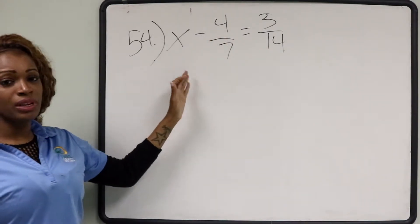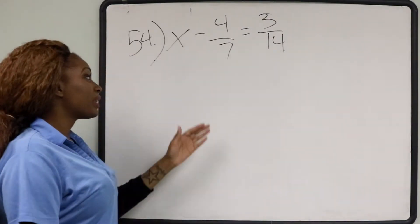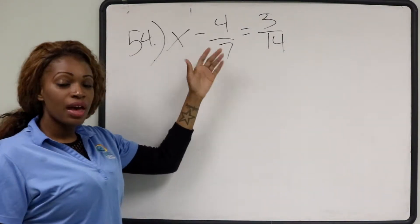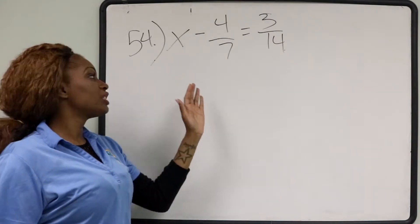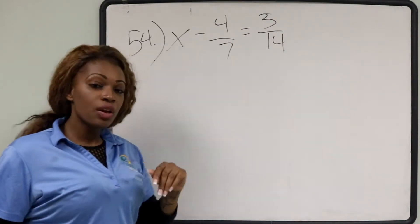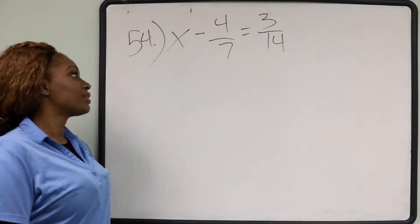And to get x alone, we want to add 4 7ths to the other side. So whenever you have a negative fraction and you want to move it to the other side of the equal sign, you want to add it so it becomes positive.